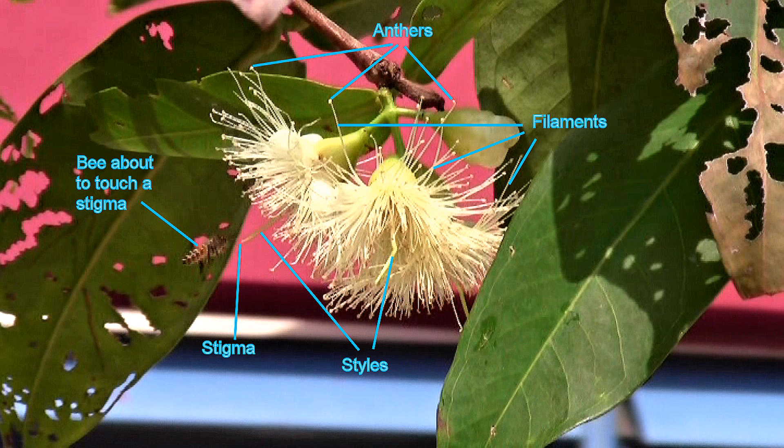In the middle of each flower is a long structure that is thicker than the filaments — that is the style, part of the female parts of the flower. At the end of the style is the stigma. For the flower to become pollinated, pollen grains must land on the stigma.